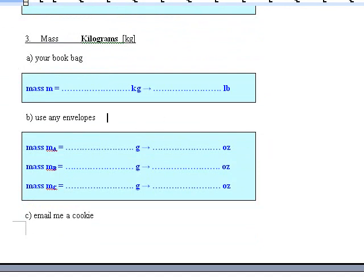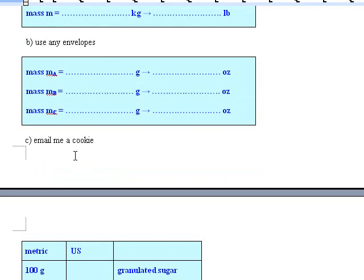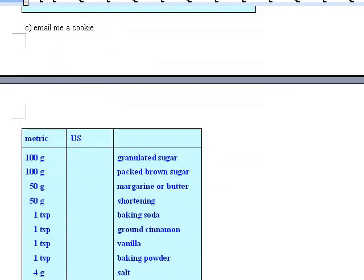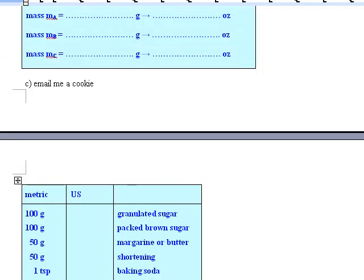Use any envelopes. Again, this only makes sense if you read through the lab sheet first and adapt it. And then here you're supposed to convert metric 100 grams for a cookie recipe to the US system in ounces. And then, yeah, definitely email me a cookie.